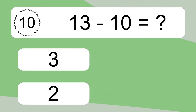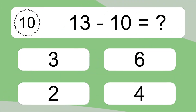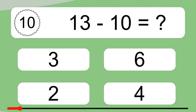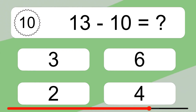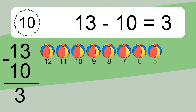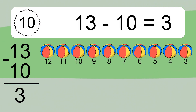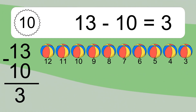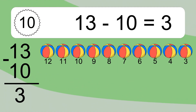13 minus 10 equals what? 13 minus 10 equals 3. Let's count it. 12, 11, 10, 9, 8, 7, 6, 5, 4, 3.